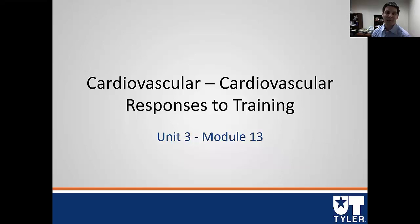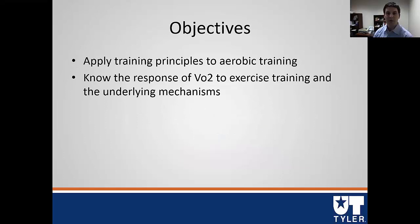In the last module for unit 3, we're going to focus on what happens with chronic training to the cardiovascular system. We're going to go through all the parts we covered in the structure and function modules and then again in the acute module. Now we're going to focus on what happens if you stack acute bouts after acute bouts — otherwise known as training — specifically oxygen consumption and its underlying mechanisms.